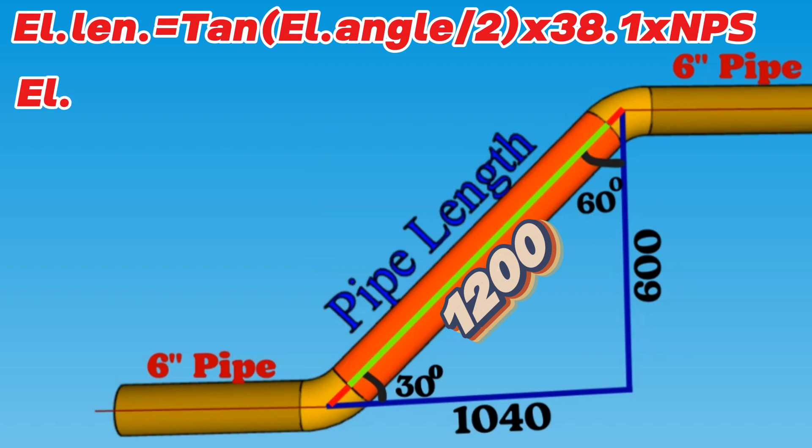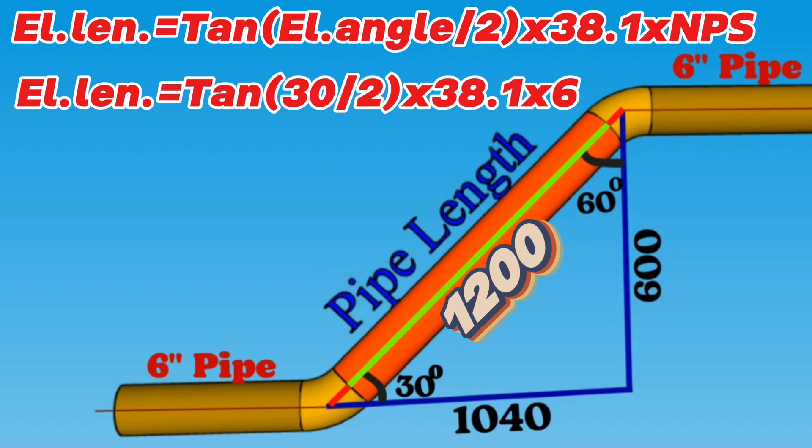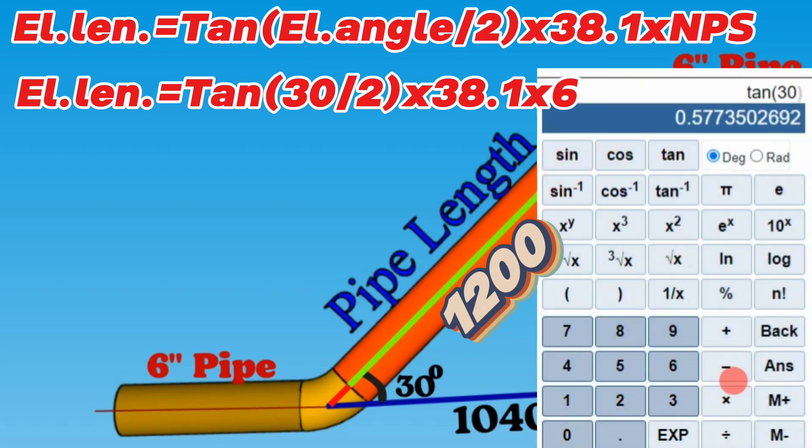Elbow length equals tangent in bracket 30 degrees divided by 2, multiplying 38.1, multiplying 6 inches. Using the calculator, we find that tangent in bracket 30 degrees divided by 2, multiply 38.1, multiply 6 inches will equal 61.